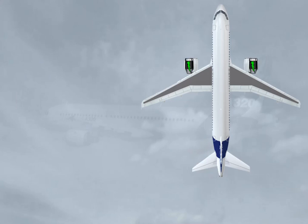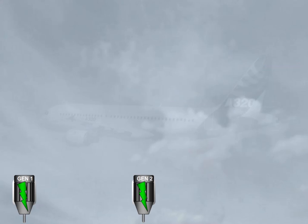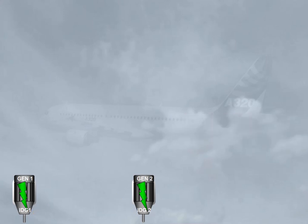There are two engine-driven generators. The generators maintain a constant speed by a drive mechanism known as an integrated drive generator, IDG. Each generator supplies alternating current, AC, to its own bus. Generator 1 to AC bus 1, generator 2 to AC bus 2.